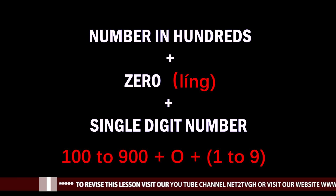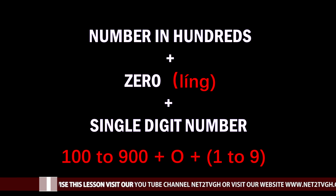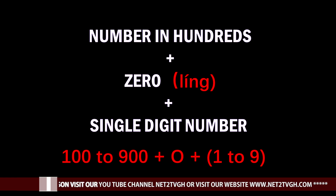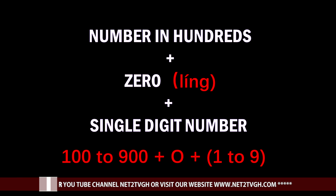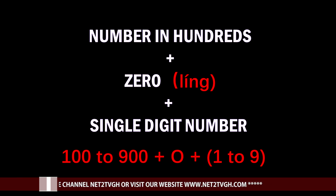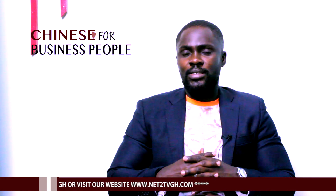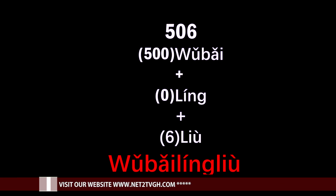A number that has zero in between: the formula is any number in the hundreds plus zero plus a single digit number. Zero is 'ling.' So for a number that has zero in between, you say the hundreds number plus 'ling' plus the single digit. For example, 506: five hundred is 'wu bai,' zero is 'ling,' six is 'liu' — so 'wu bai ling liu.'